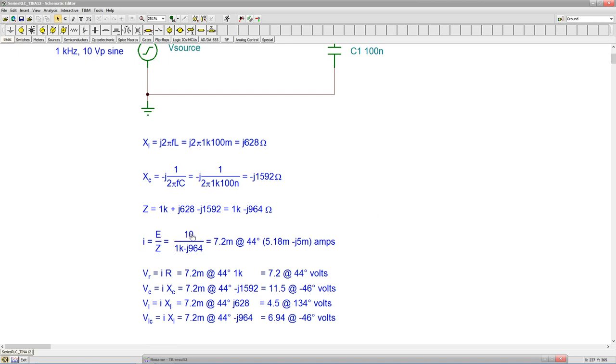So our current is just the source, 10 volts at an angle of 90, divided by our impedance, the 1k minus j964. We get approximately 7.2 milliamps at an angle of 44 degrees.